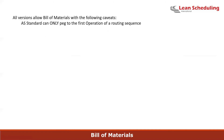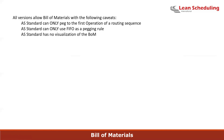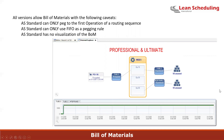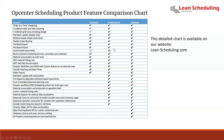All versions support bill of materials, but with caveats. The AS Standard can only peg to the first operation of a routing sequence — even if a sub-component isn't needed until operation 40, it will be grabbed at operation 10. The Standard also only supports FIFO as a pegging rule and has no BOM visualization, limiting you to shortage reports. The Professional and Ultimate provide a visual bill of materials where you can double-click to traverse jobs up and down the BOM, which is very useful for verifying pegging.